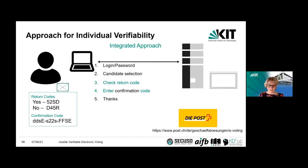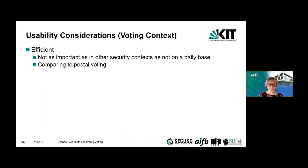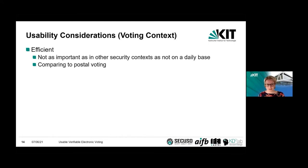Before I come to our research on two of these systems, let me make some remarks on usability in the voting context. Usability usually means you want an efficient, effective, and satisfying system. For efficiency, a lot of usable security research tries to make security as fast as possible — because if you need to authenticate many times a day on your mobile device, you don't want it to take 10 or 20 seconds.